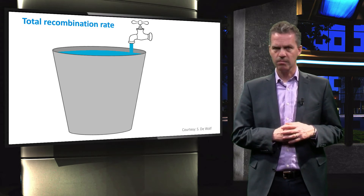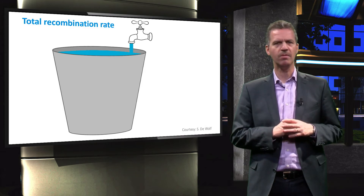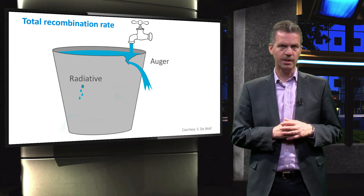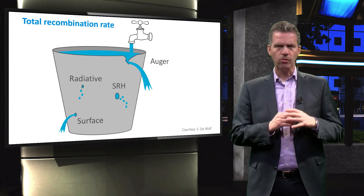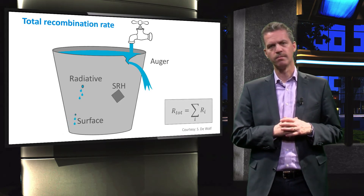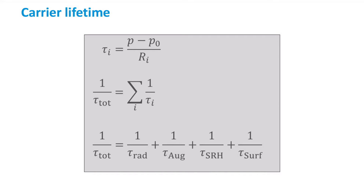Now we have several recombination mechanisms acting at the same time, like Auger and radiative recombination that are always present in any material, but also SRH and surface recombination. With the right processing technologies we are able to minimise SRH and even surface recombination. The total recombination rate that the carriers experience is equal to the sum of all individual rates. As the rate of each recombination mechanism is inversely proportional to its associated lifetime, it follows that the total lifetime can be calculated with an expression showing that the mechanism with the shortest lifetime dictates the total lifetime of the carriers.